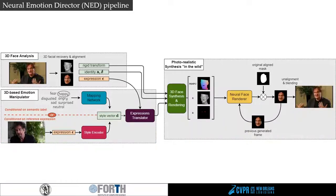After that, we use the translated expressions along with the original identity and camera pose to generate a computer graphics rendering consisting of a rasterized semantic texture, a 3D shape, and the eye pupils. Finally, our GAN-based face renderer maps this intermediate rendering to a realistic face of the target actor, which is composited onto the original background.